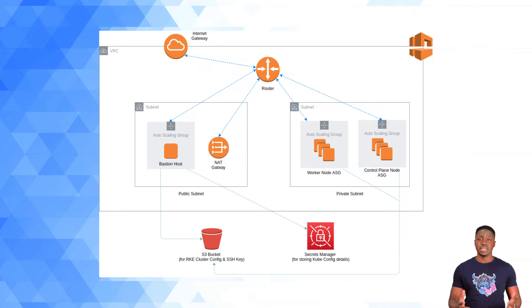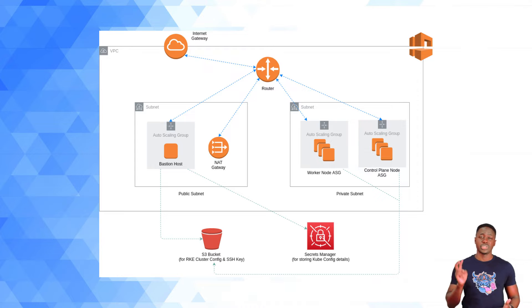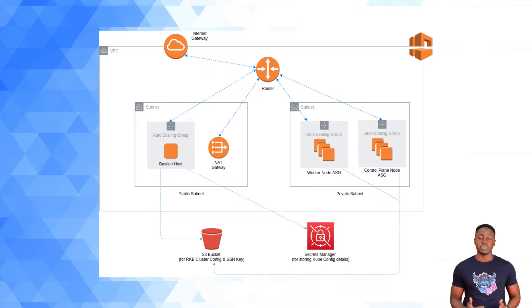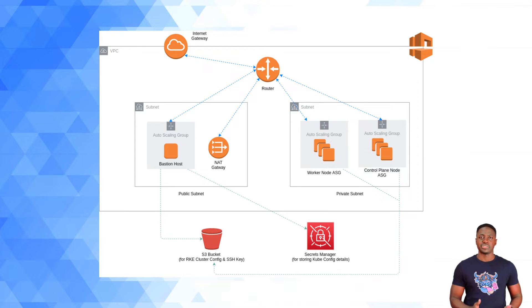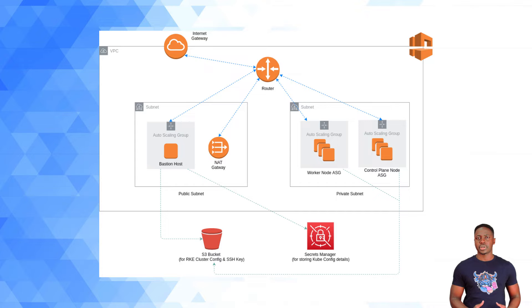I'm going to be provisioning a VPC in AWS that consists of public and private subnets. The public subnet will have a bastion host, which serves two purposes. One is that is where RKE is going to run and provision the Kubernetes cluster. The second purpose is I'll be SSHing into it so I can communicate with my Kubernetes cluster once it's been provisioned — a private cluster endpoint, not publicly accessible. The private subnets are where my control plane and worker plane will exist. We'll have auto scaling groups for each, making it easy to set up a highly available Kubernetes cluster by specifying the desired and minimum number of nodes.